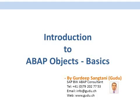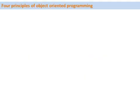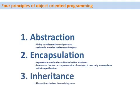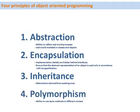Hi, my name is Gurdeep Santani. In this session I am going to talk about some basics of ABAP objects. ABAP objects follows the four basic principles of object-oriented programming: these are abstraction, encapsulation, inheritance, and polymorphism. Abstraction is the ability to reflect real-world processes in a programming language. For this purpose we have attributes, methods, and events.